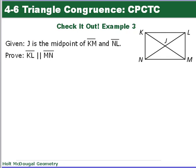Here's your check it out: given that J is the midpoint of segment KM and segment NL, prove that segment KL is parallel to MN. Again, prove the triangles are congruent first, then use a converse theorem to prove the parallel lines.